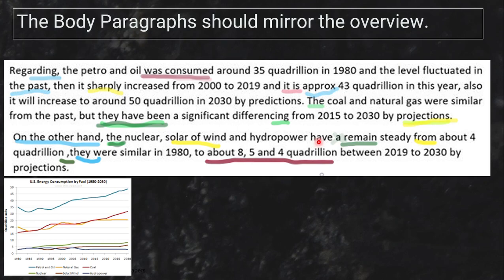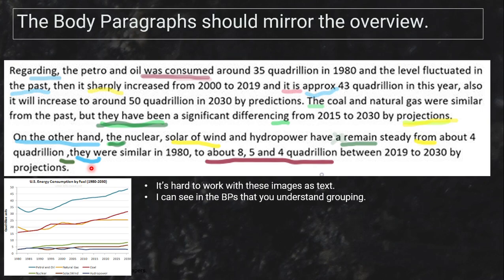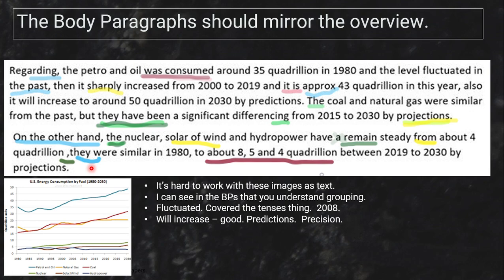Going on to coal and natural gas: she says they 'were similar from the past' but 'have been a significant differencing from 2015 to 2000.' What she's trying to describe is that coal increased while natural gas is predicted to remain flat — she just doesn't have the language to do it yet. On the other hand, I don't recommend using 'on the other hand' here — better to use 'by contrast.'